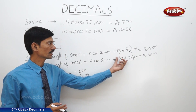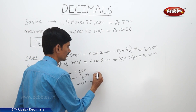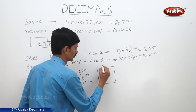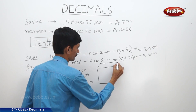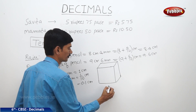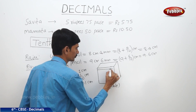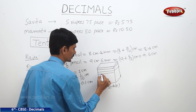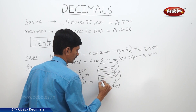To understand more about the decimal tenths part, let us represent the whole by a block. This block represents the whole.